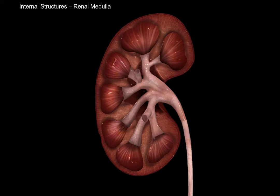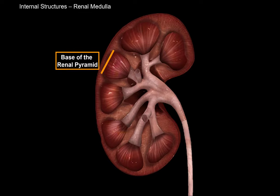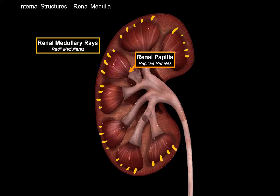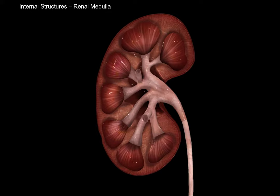The renal medulla consists of renal pyramids — there are about 7 to 18 within one kidney. Each pyramidal structure, together with the adjacent cortex, forms what we call renal lobes. The renal pyramid has a base directed towards the cortex and an apex on the other side. These apexes fuse together to form the renal papilla. There are also parts of the medulla that radiate towards the cortex, called renal medullary rays. The rest of the nephron — the loop of Henle and the collecting duct — is found here in the medulla.